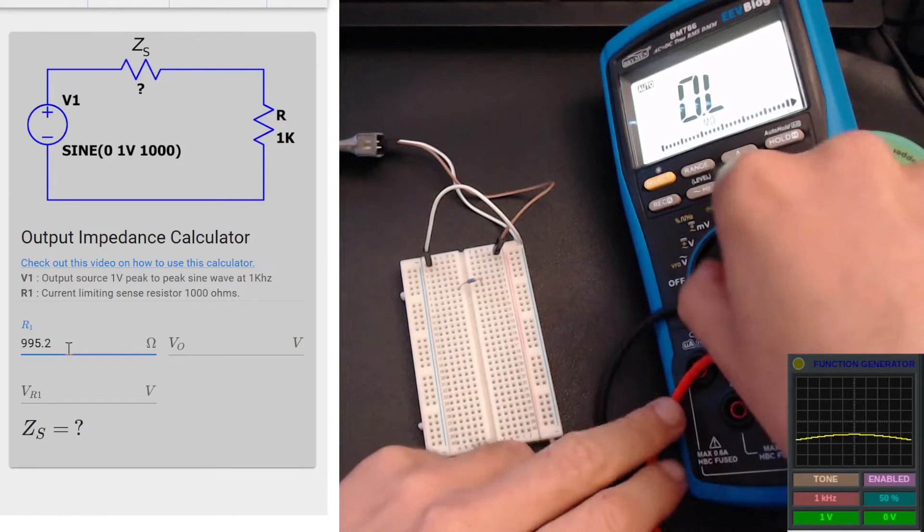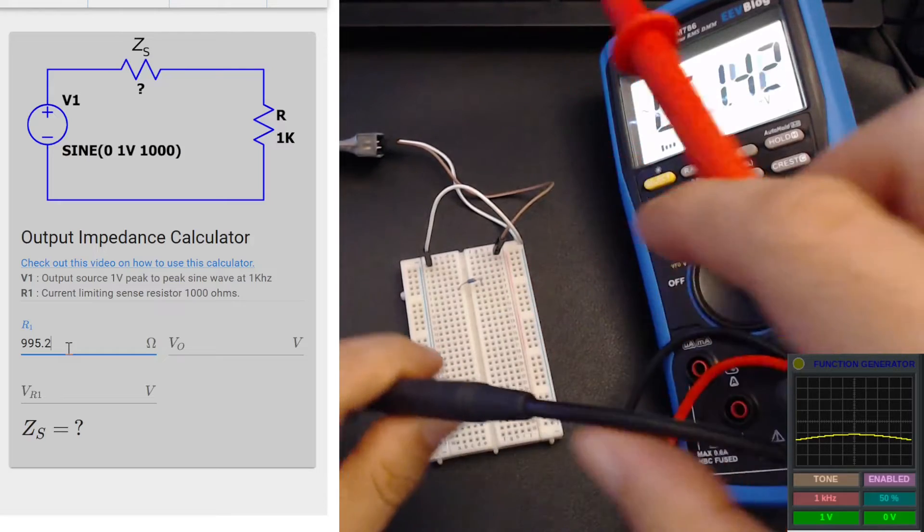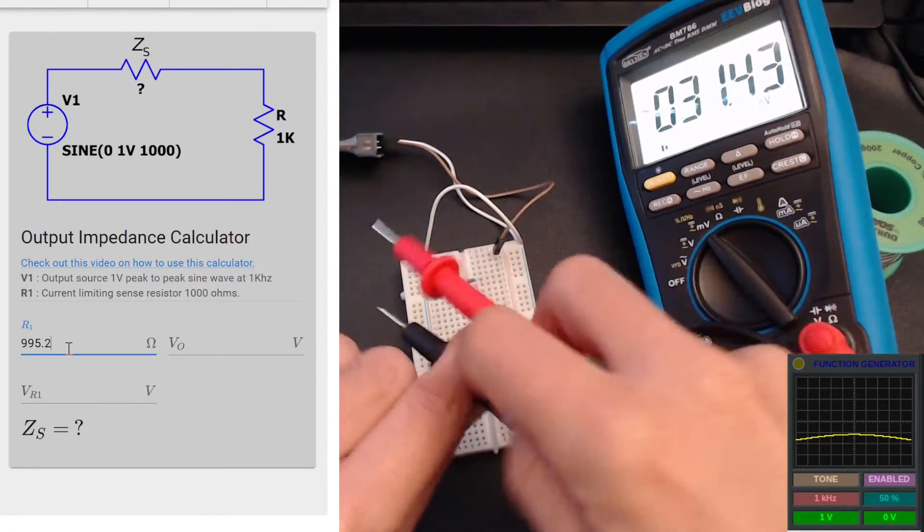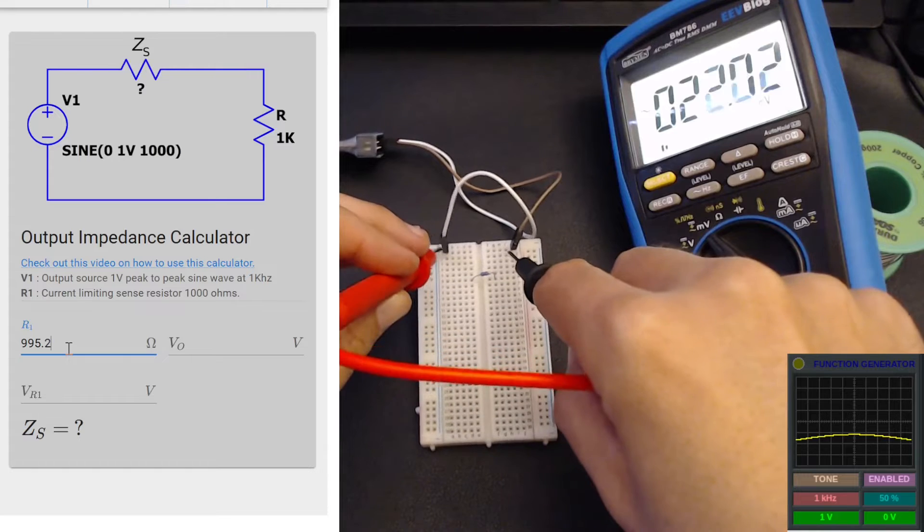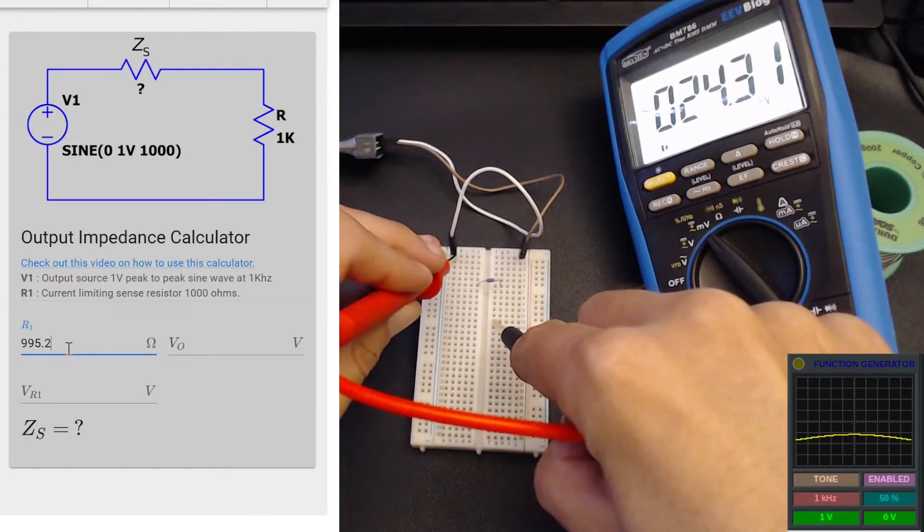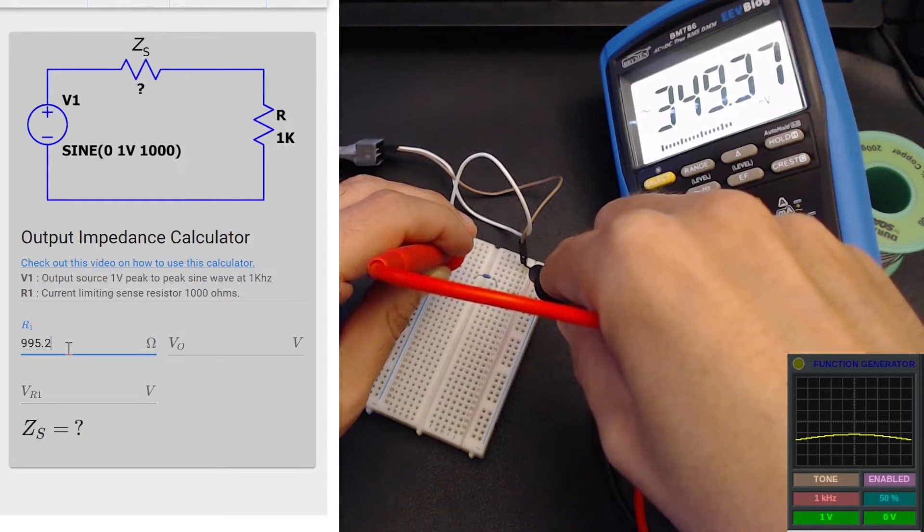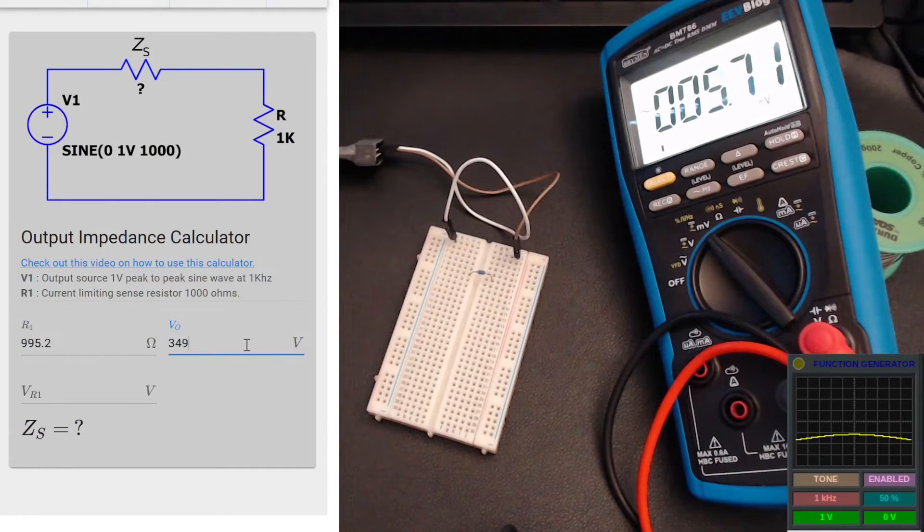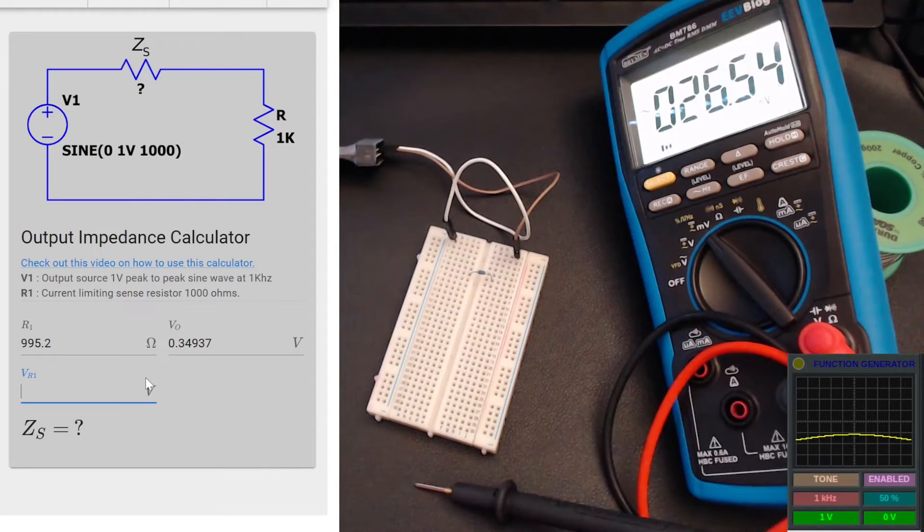Now I'll switch to AC readings in millivolts level. Our signal generator is at 1 volt, so 1 millivolt level is fine. I will measure the open circuit RMS voltage on our signal generator. These are the probes of our signal generator, positive and ground. We're looking at 349.37 millivolts. The measurement unit here is volts, so for accuracy I'll put it as 0.34937 volts.